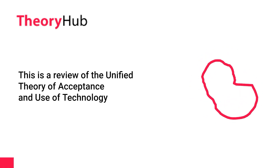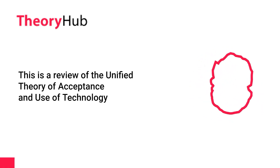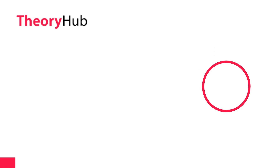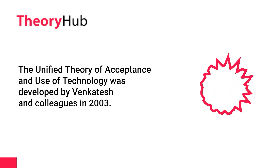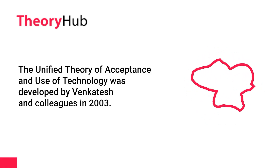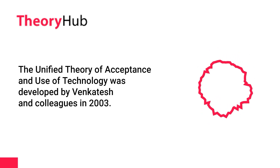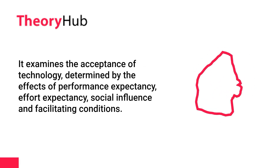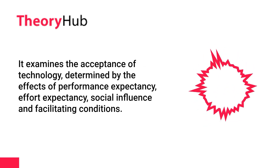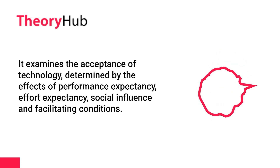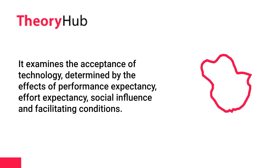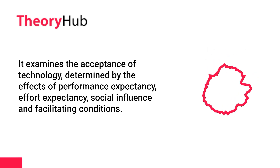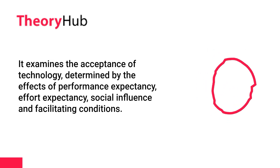This is a review of the Unified Theory of Acceptance and Use of Technology. The Unified Theory of Acceptance and Use of Technology was developed by Venkatesh and colleagues in 2003. It examines the acceptance of technology, determined by the effects of performance expectancy, effort expectancy, social influence and facilitating conditions.